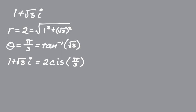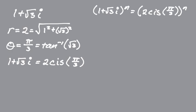Going back to the original problem, we're trying to raise that to the n. So (1 + √3i)^n is the same as (2 cis(π/3))^n. Now I'm going to use De Moivre's theorem to raise this complex number to the nth power. That gives us 2^n cis(n · π/3). Really useful theorem.